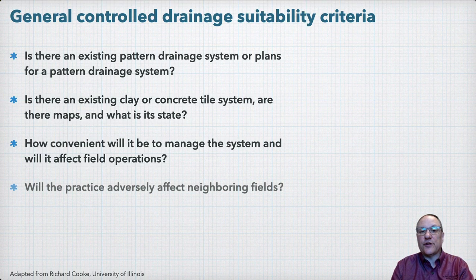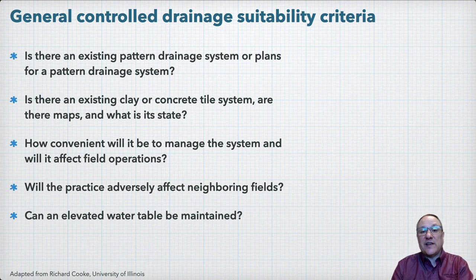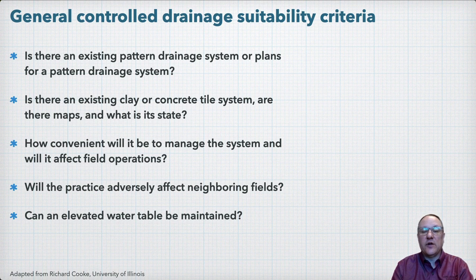When we raise the outlet for a controlled drainage system, which will elevate the water table at times, we need to consider whether that will impact neighboring fields — for instance, whether there are nearby low spots in surrounding fields that would be negatively impacted. A fundamental question is whether the soils are conducive to maintaining a high water table. For example, if the soils are sandy or topsoils over a restrictive clay layer, it may be difficult to maintain an elevated water table because of lateral movement of water away from the field. There could also be a discontinuous restrictive layer where water can find areas to move vertically downward, and in either case controlled drainage will not have the desired impact.